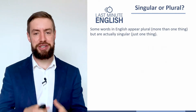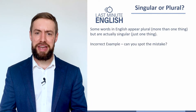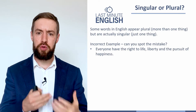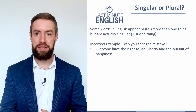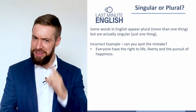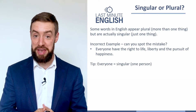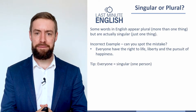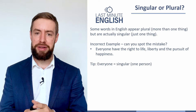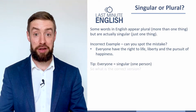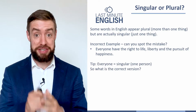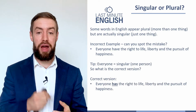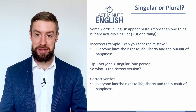Let's take a look at this example: 'Everyone have the right to life, liberty and the pursuit of happiness.' What's the problem there? Can you see it? With 'everyone,' it feels like it should be more than one person, but actually in grammar we think about it as one person — it's singular. So the correct version should be: 'Everyone has the right to life, liberty and the pursuit of happiness.'